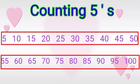Five, ten, fifteen, twenty, twenty-five, thirty, thirty-five, forty, forty-five, fifty, fifty-five, sixty, sixty-five, seventy, seventy-five, eighty, eighty-five, ninety, ninety-five, then hundred. Okay Kuti, do you understand about counting fives?